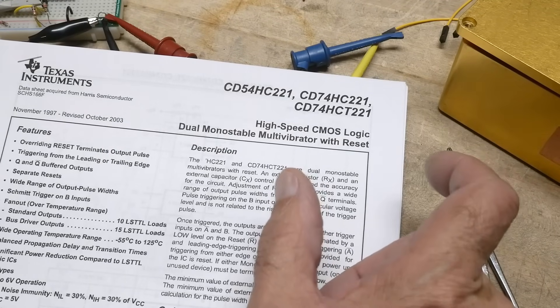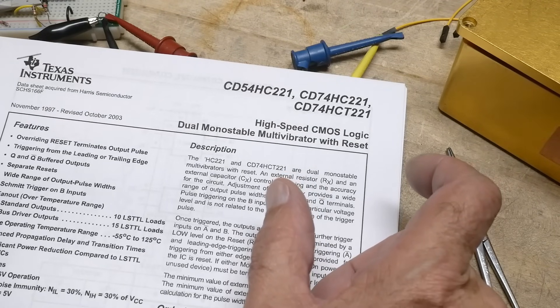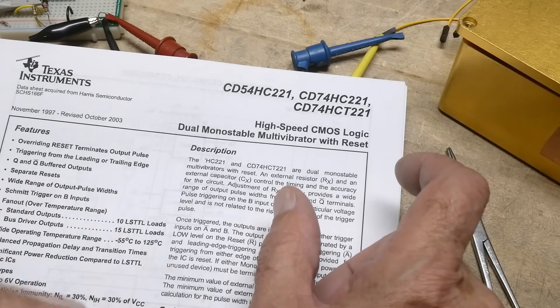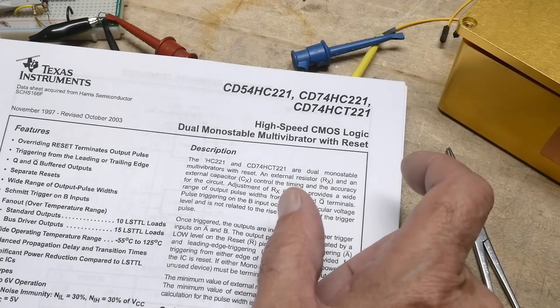And it generates a pulse of a fixed width. So it just sits around, it waits for the pulse. If it sees a pulse, you can set it so it looks for a rising pulse, or a rising edge, or a negative edge.